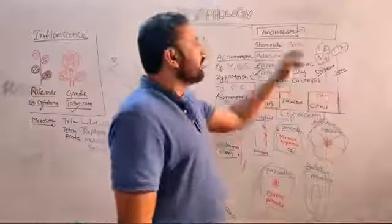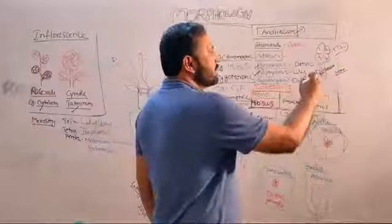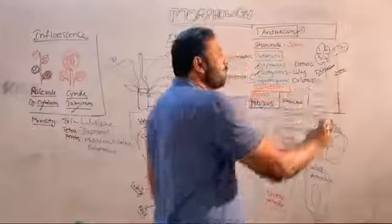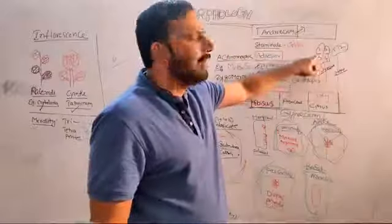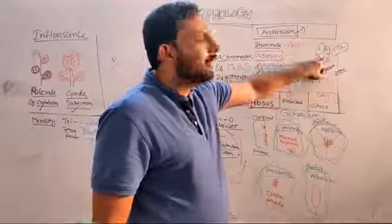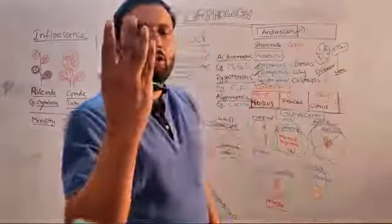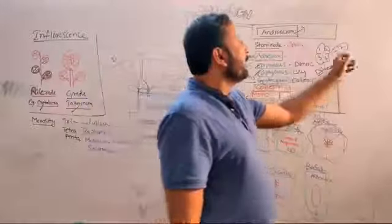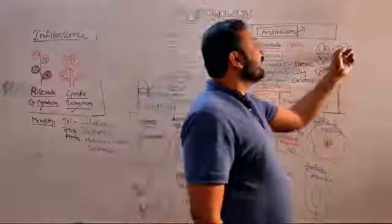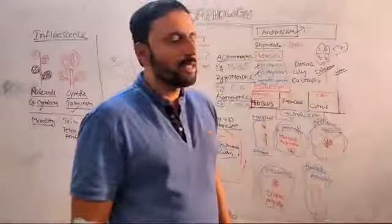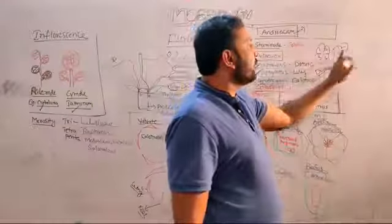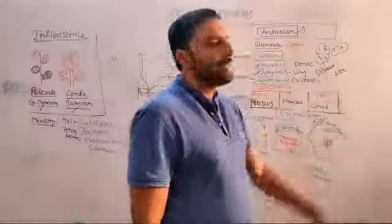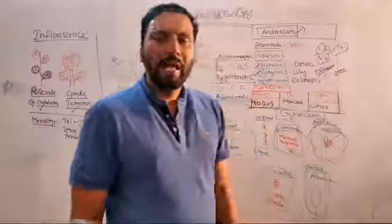The third whorl of the flower is called androecium; its unit is called stamen (microsporophyll). The stamen has two parts: filament and anther. The anther generally contains two anther lobes with four microsporangia (four pollen sacs) — called dithecous, example Datura. If the anther contains two anther lobes with only two microsporangia, it is called monothecous — example Hibiscus.